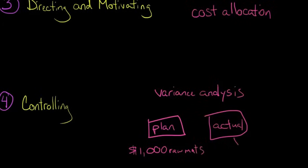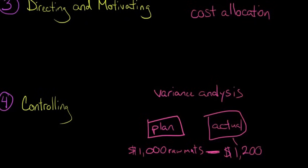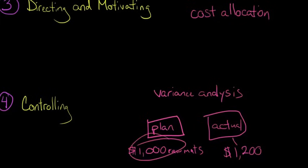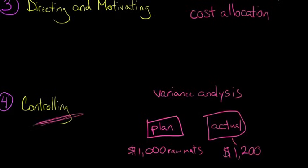But then we find out that actually after the period is over, we look and we say, we actually spent twelve hundred dollars. So now what we have is we know that we overspent here by two hundred dollars more than what we actually set out at the beginning of the period. So now we can go about and think, let's analyze this and let's think about are we doing a good job controlling our costs?